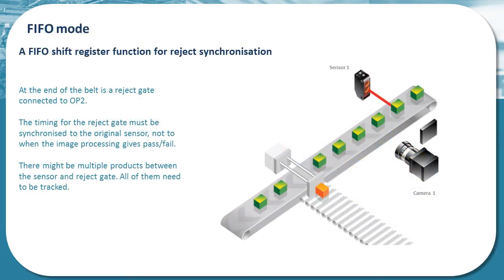The CC320 also has the inbuilt function of a first in, first out shift register for synchronising applications such as reject mechanisms. In these applications, the timing for the reject gate will be synchronised to the original sensor. There might be multiple products between the original sensor and the reject gate, and all of them will be tracked so that the relevant faulty products can be rejected at the appropriate point.